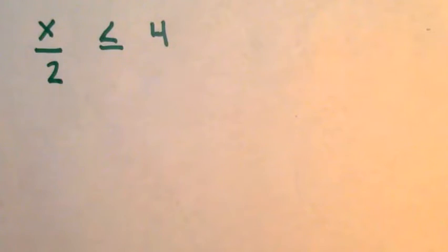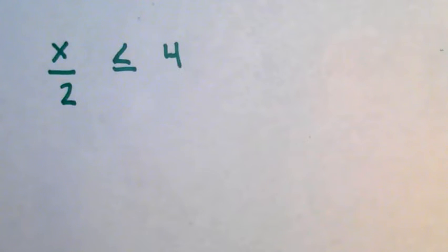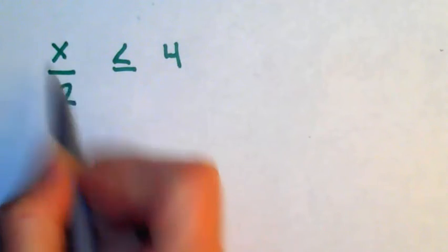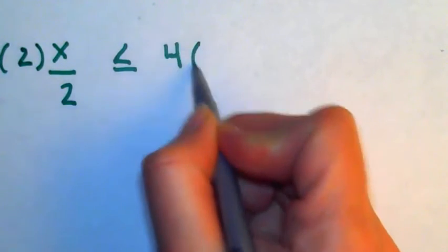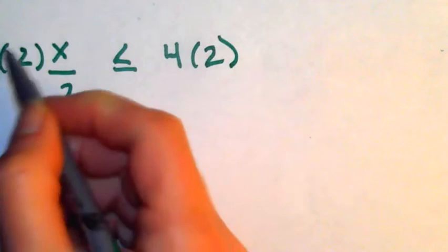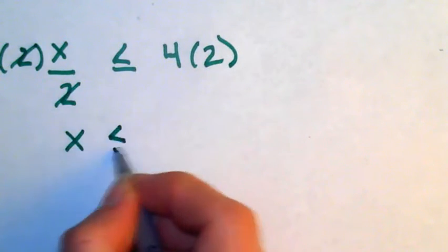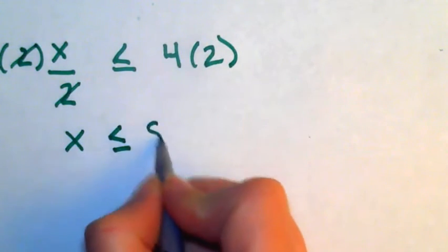Okay, so that was an example of a multiplication inequality. Here we have some number divided by 2 is less than or equal to 4. Using my inverse operations to solve, the opposite of dividing by 2 is multiplying by 2, multiplying by 2. That's gone. x is less than or equal to 4 times 2, which is 8.